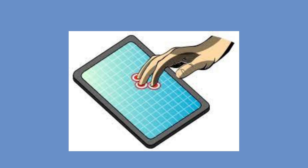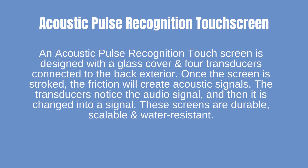An acoustic pulse recognition touchscreen is designed with a glass cover and four transducers connected to the back exterior. Once the screen is stroked, the friction creates acoustic signals. The transducers detect the audio signal and then it is changed into a digital signal. These screens are durable, scalable, and water-resistant.